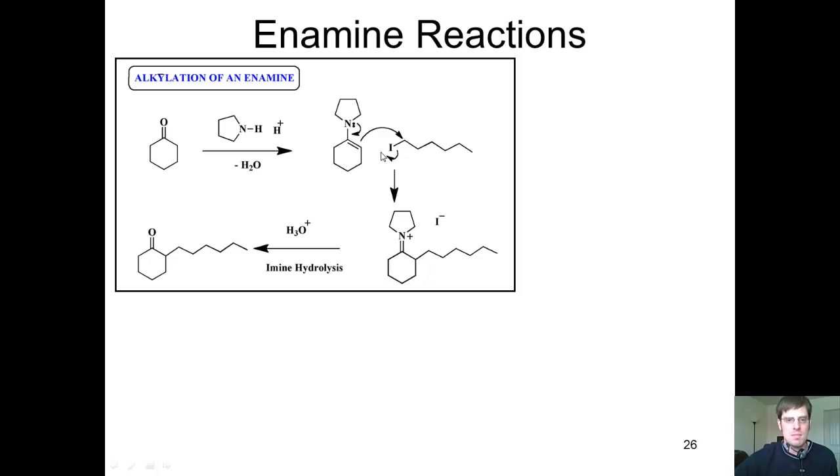If I treat this enamine with an alkyl halide, like this alkyl iodide, then the electrons in the nitrogen push down, and the electrons in this double bond come out and attack that carbon, attaching this alkyl chain here. You can take an enamine like this and treat it with acid, and it will actually hydrolyze it or convert it all the way back to a ketone.